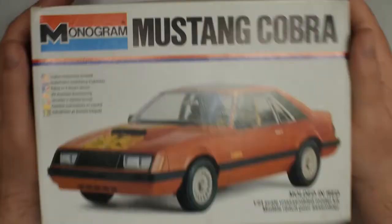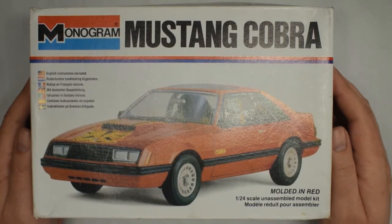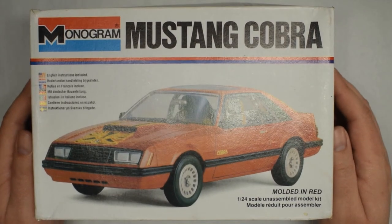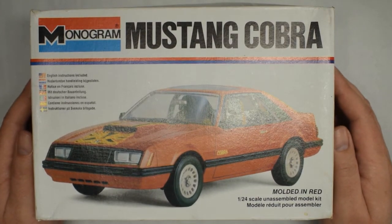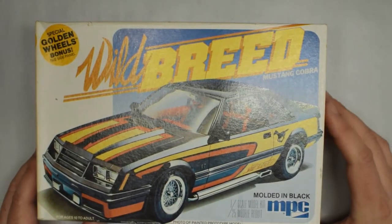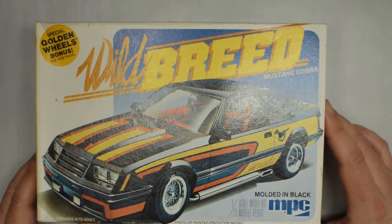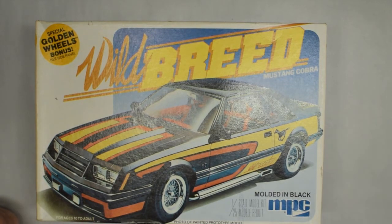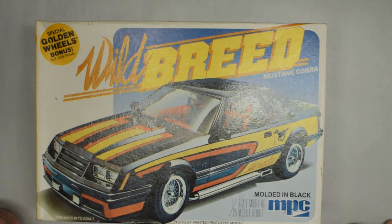Hey, it's Kurt with Caged Model Works. Today I'm going to talk to you about very early Fox Body Mustang kits. You and I will look at the Monogram Mustang Cobra kit, which depicts a 1979 Ford Mustang Cobra, as well as the MPC Wild Breed Mustang, which also depicts a Mustang Cobra and has some pretty cool options. Hopefully, if you were interested in building a Fox Body Mustang, this comparison will be useful to you. Alright, so let's go and have a look.